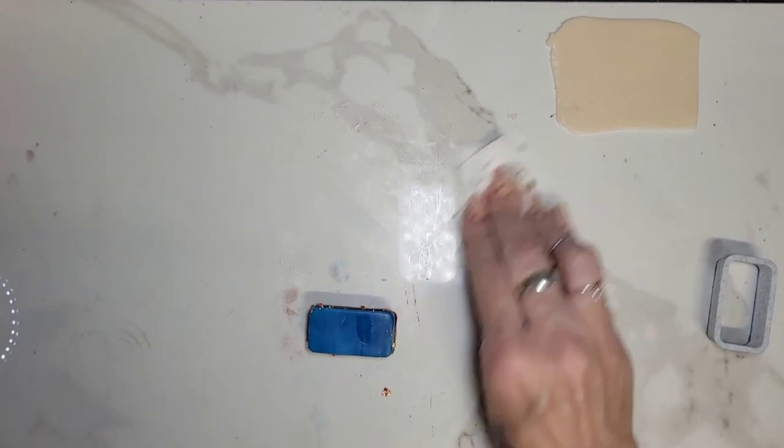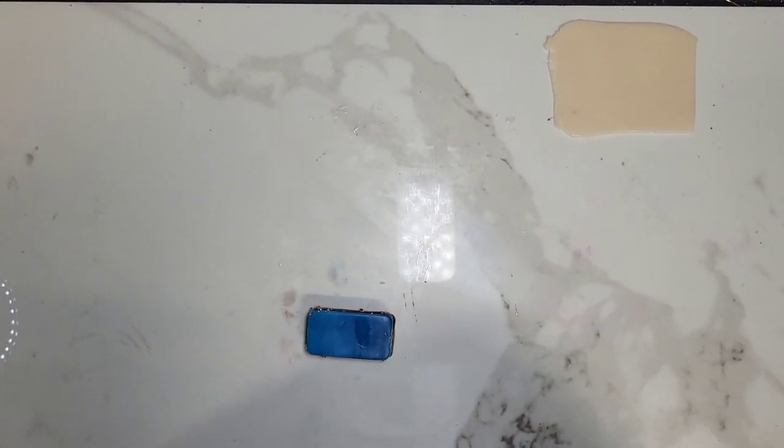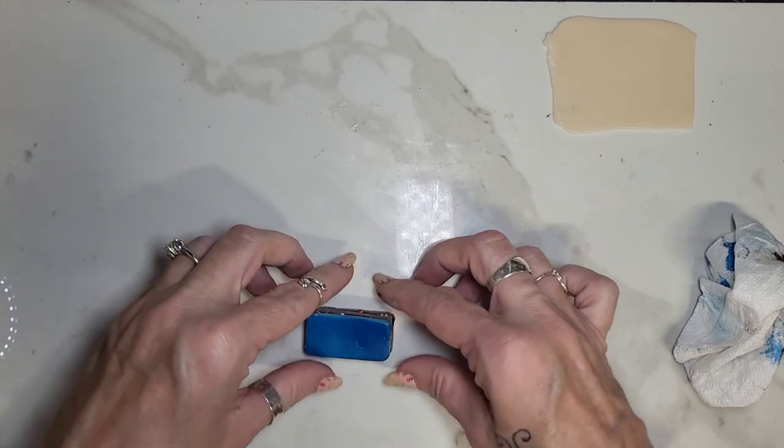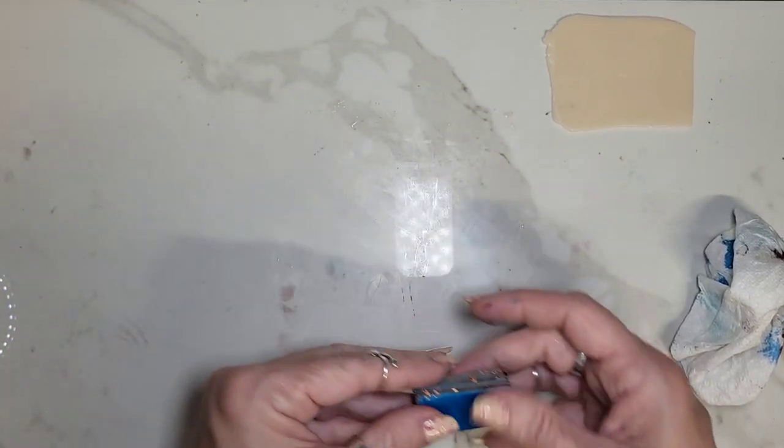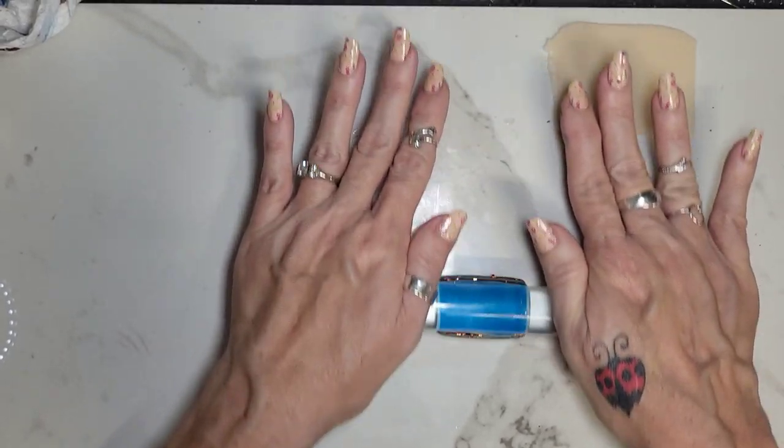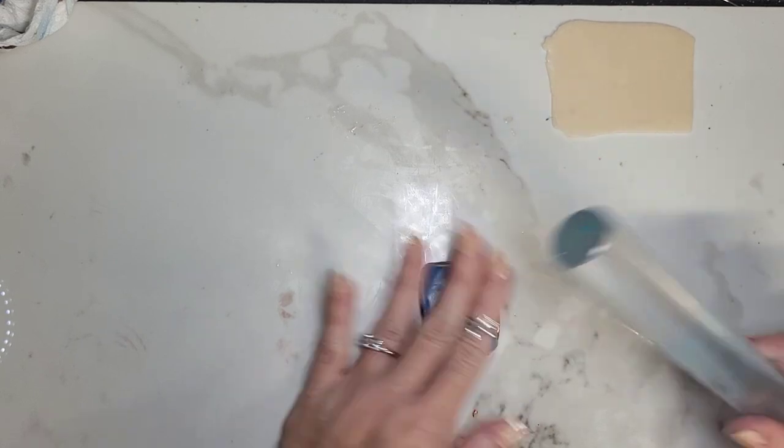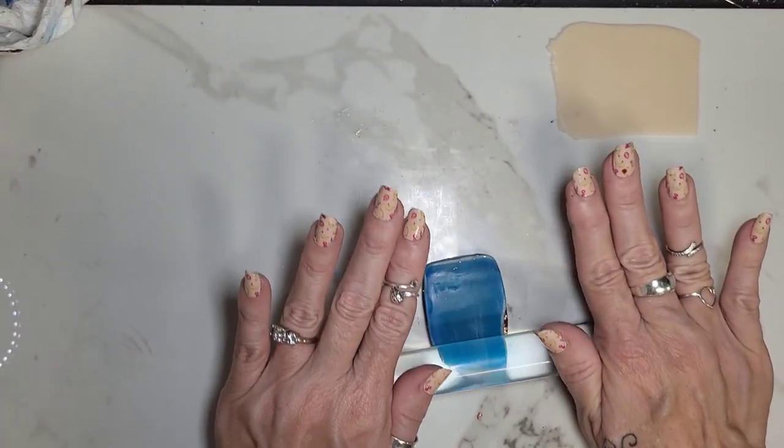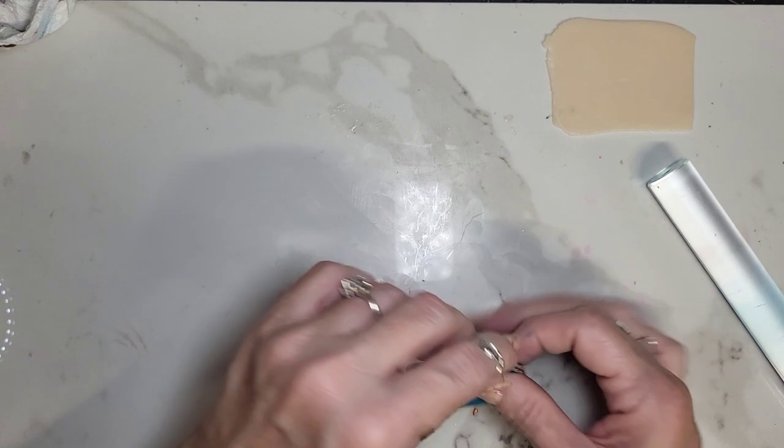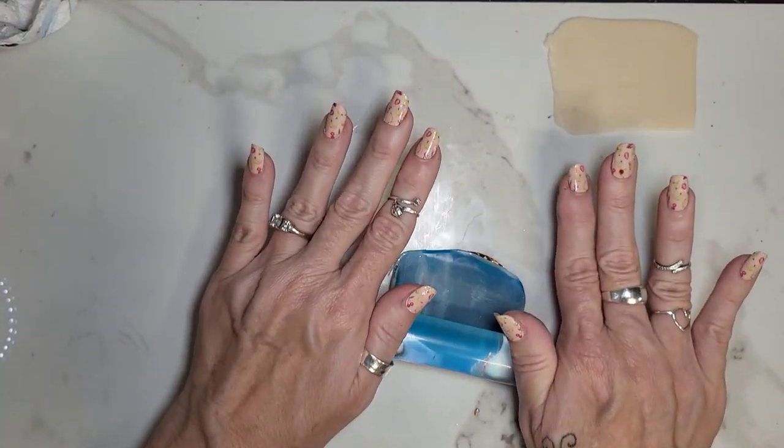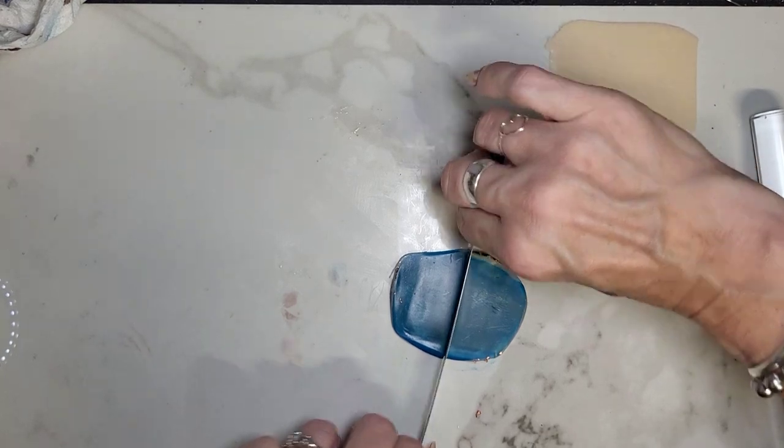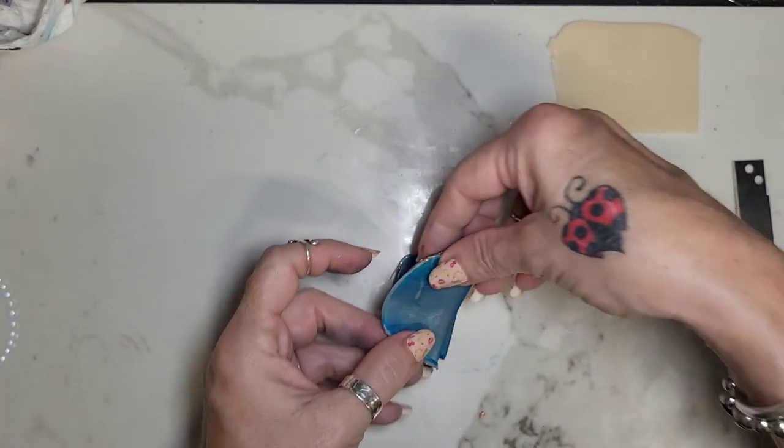I'm just going to wipe this up a little bit. And then I'm going to take this little slab. And then I'm going to roll it out a little bit. And then I'm going to cut it in half. And then turn it and place it on there.